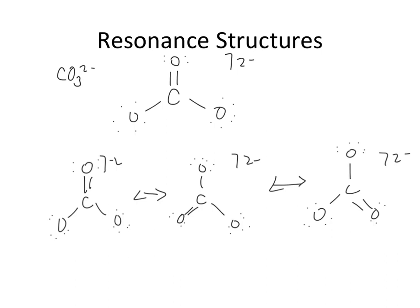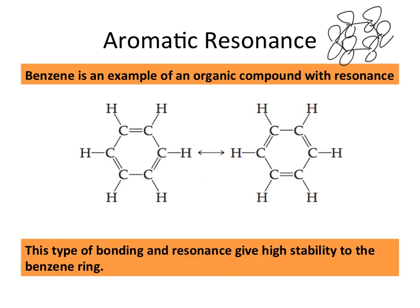Resonance is pretty straightforward — it's connected to the ability to draw the correct Lewis dot structures. If you can draw the correct Lewis dot structures, you can subsequently get the resonance forms you need. Benzene is an example of an organic compound that has resonance. In the case of benzene, the double bonds you see along the ring can actually move from location to location within the ring, giving you a new resonance structure.